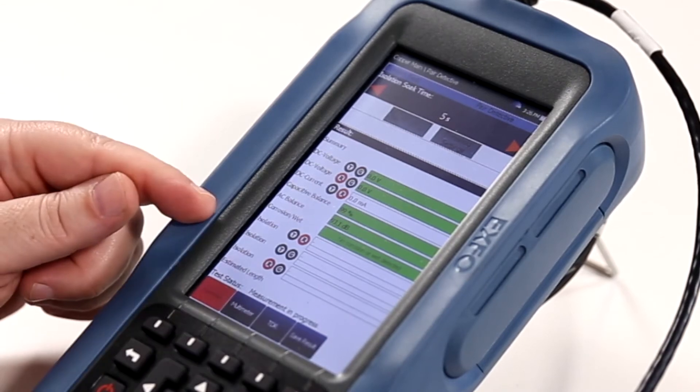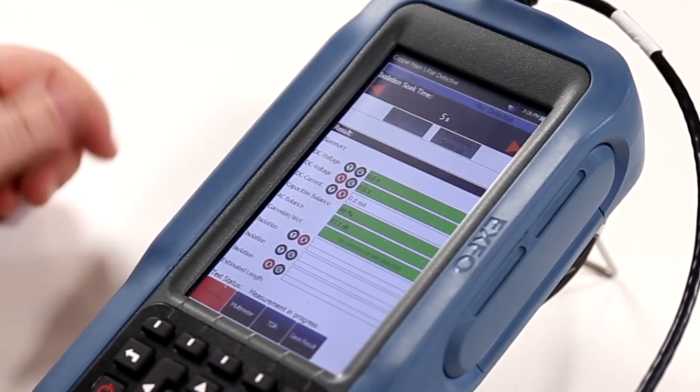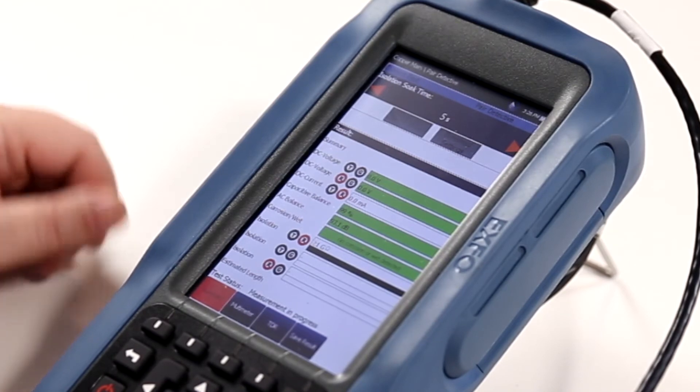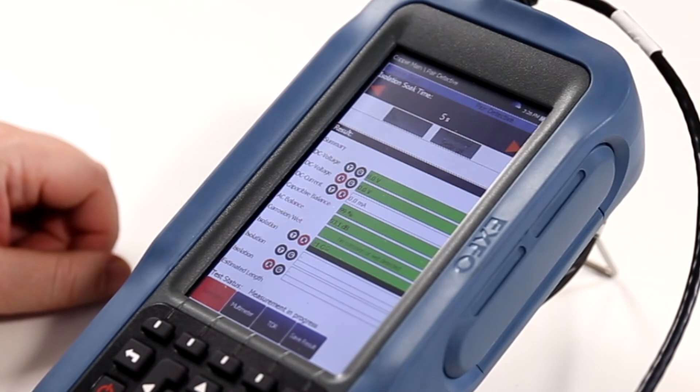Finally into the isolation or insulation resistance test, whereby we are looking for faults to ground, resistive faults to ground, and we do our measurements up to one giga-ohm.